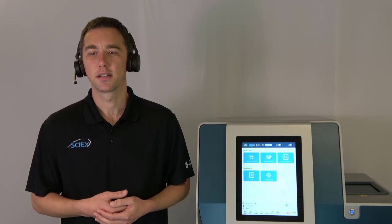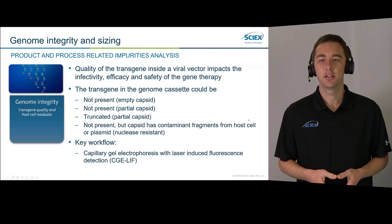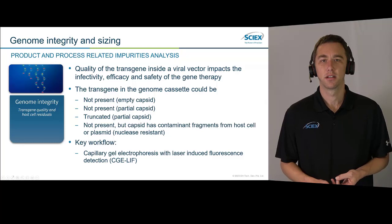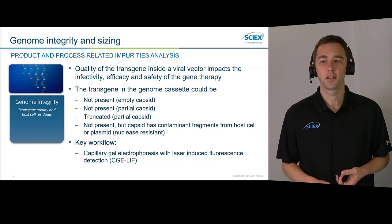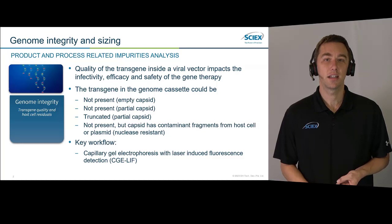Let's take a few minutes to review the background and analytical characteristics of AAV, and overview the CGE method for AAV genome integrity analysis. This genome integrity analysis is quite important. It's not something that everybody thinks of right away when they're getting into the AAV space, but we really need to use it to monitor both our product and process-related substances or impurities. The quality of the transgene that we're delivering inside our viral vector is really going to impact the infectivity in our patient, the efficacy of our drug, and potentially the safety of that gene therapy.